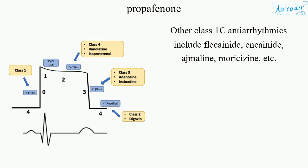Other class 1C antiarrhythmics include flecainide, encainide, ajmaline, moracizine, etc.